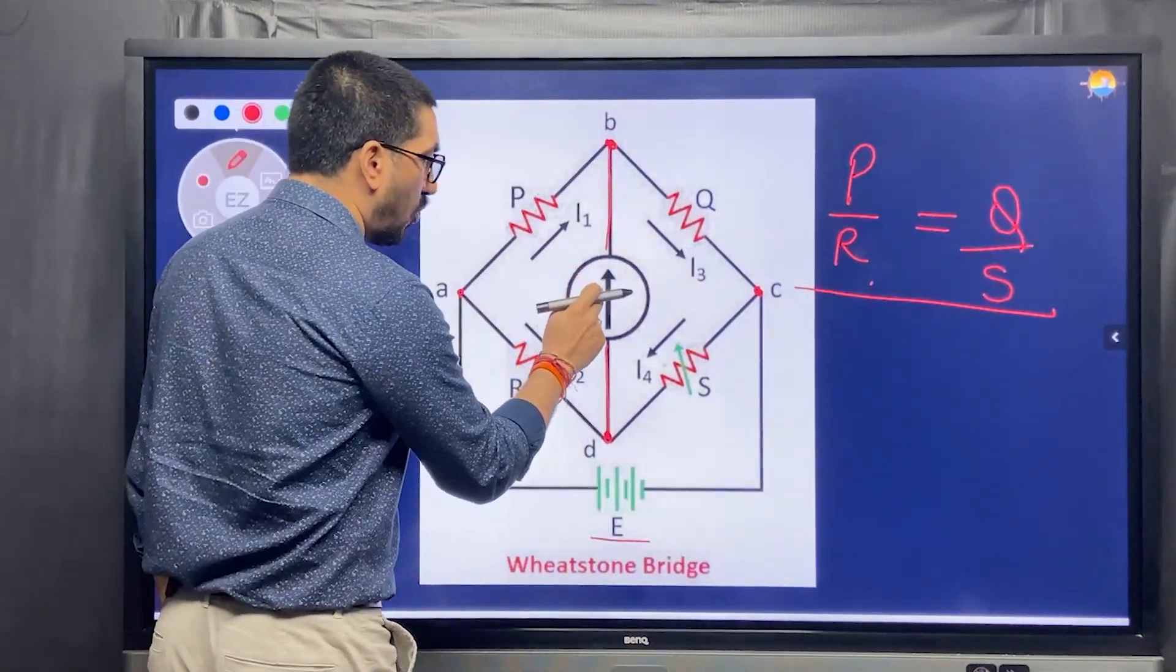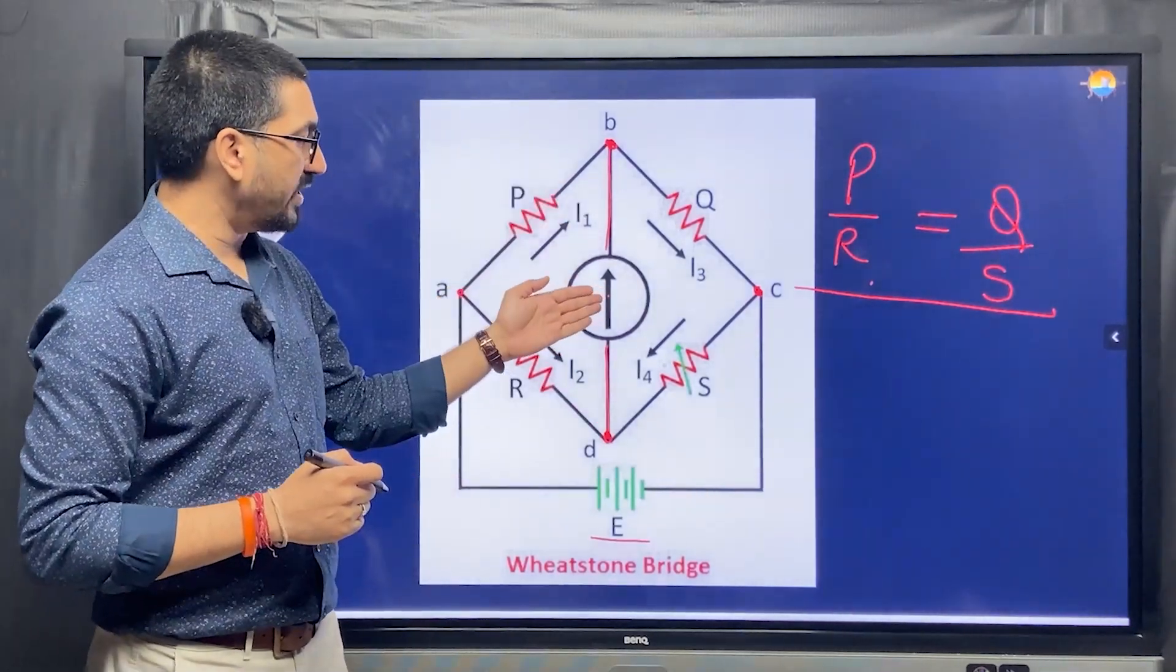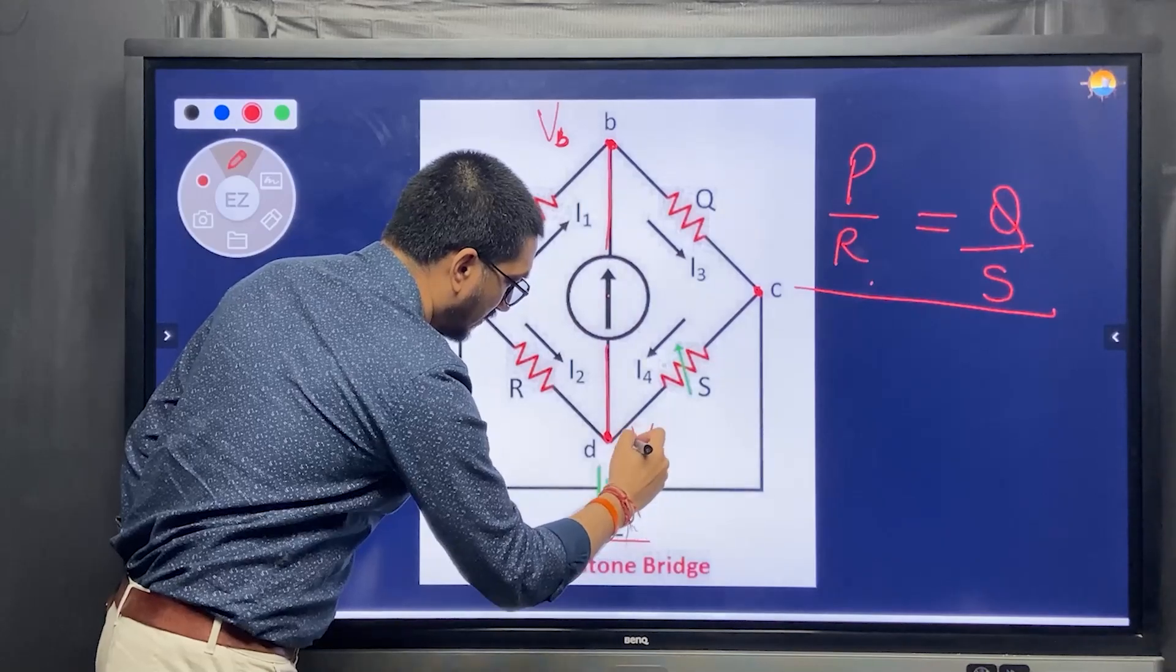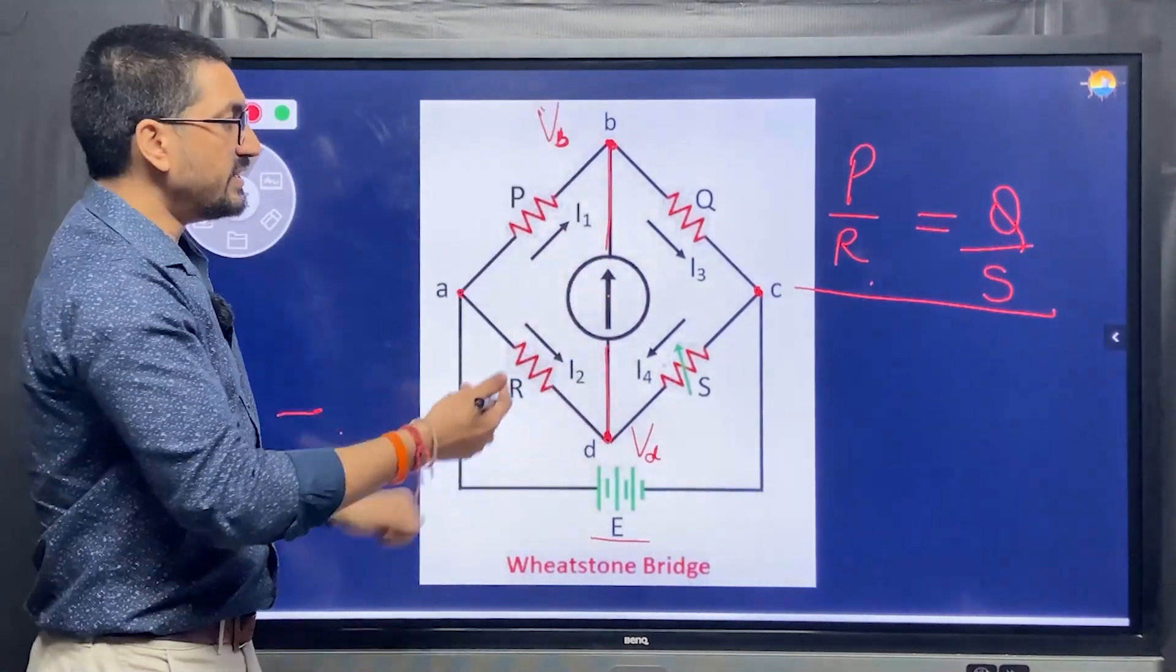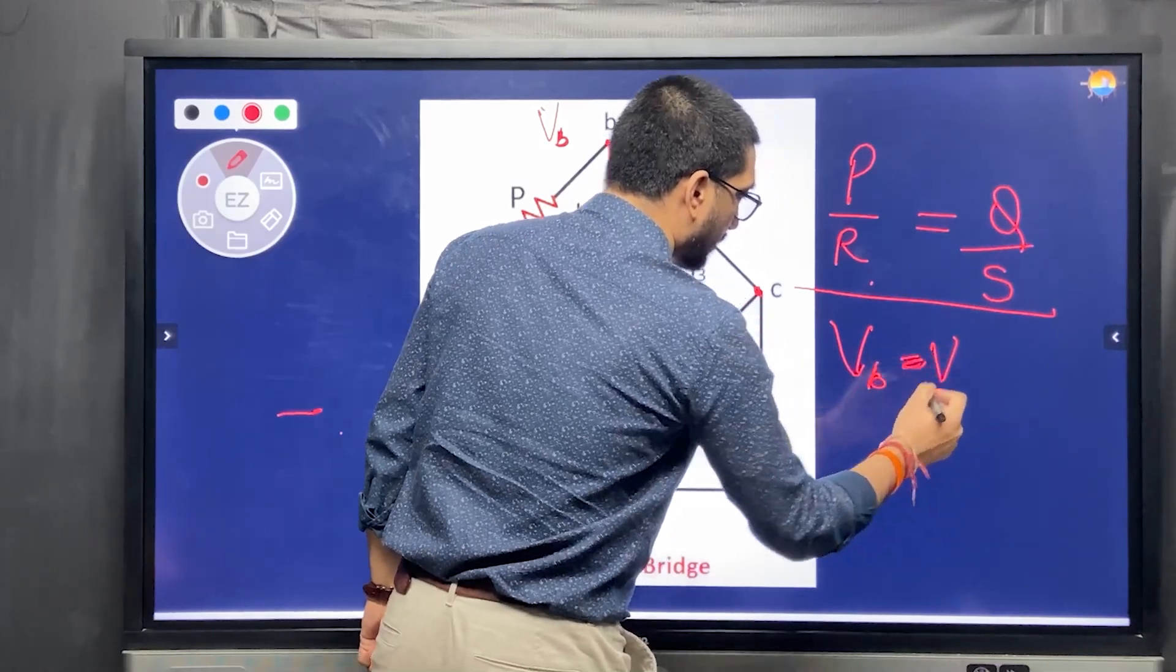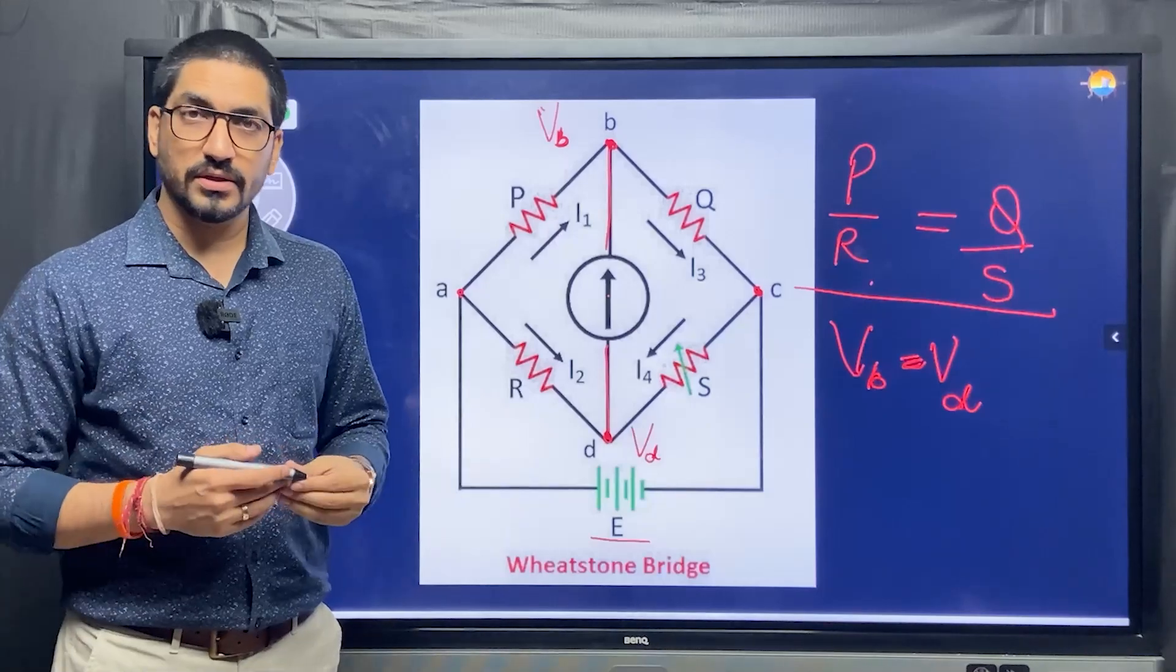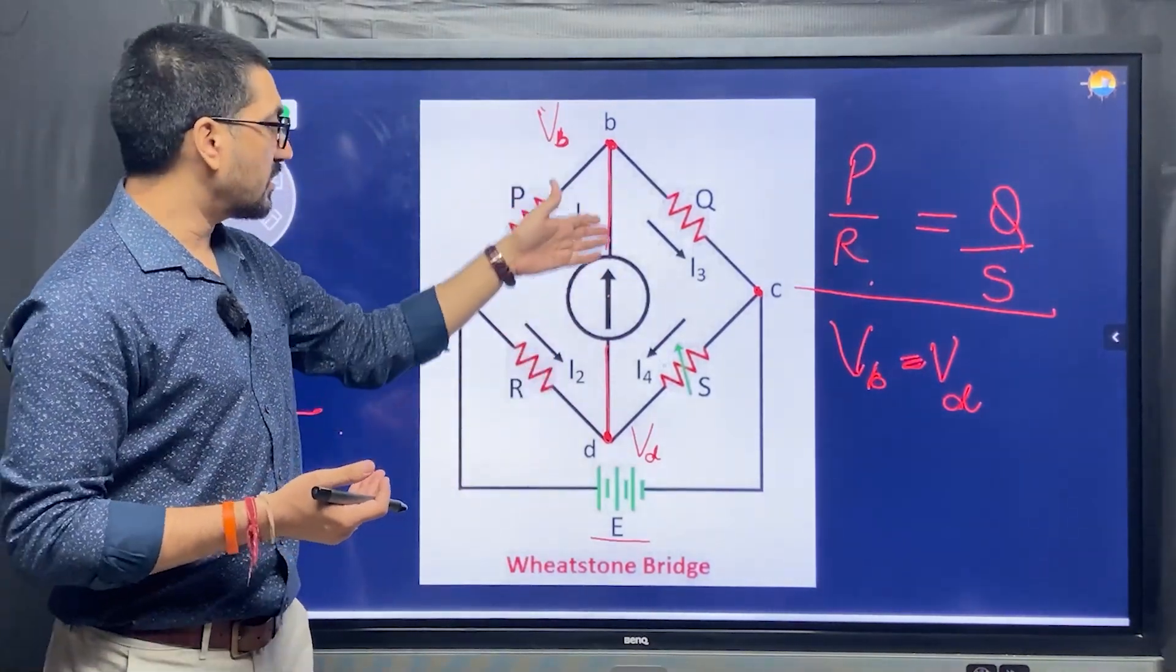If there is no current flowing through this arm, that means galvanometer is showing me zero deflection. That also means if there is no current flowing, the potential at B, VB, and the potential at D, VD, when there is no current flowing, that basically means the potential had to be same. That is why there is no current flowing. In that case, we can say that VB is equal to VD. Potential at B is same as potential at D. So basically, we can say that potential difference between B and D is zero. When there is no potential difference, the current will not flow in this arm.